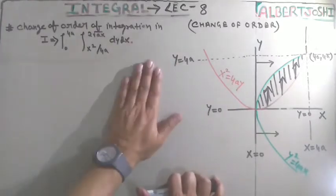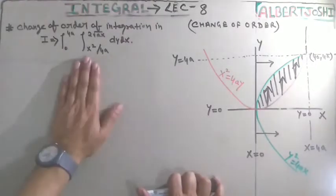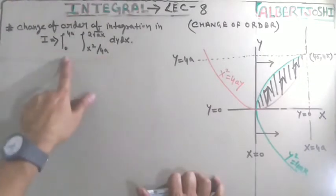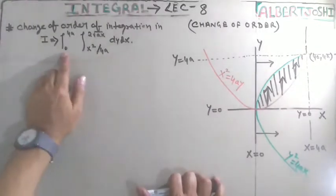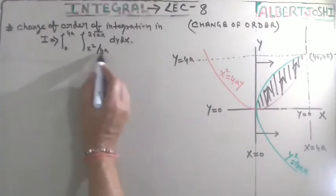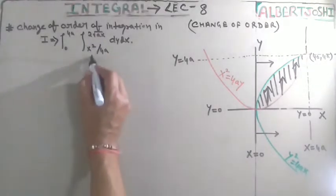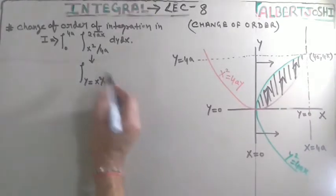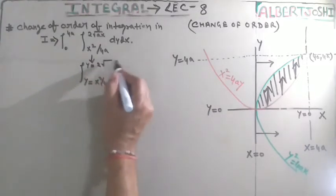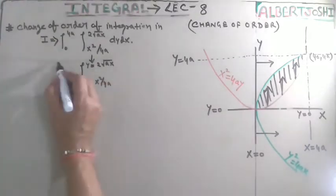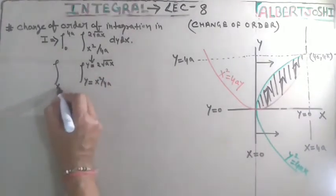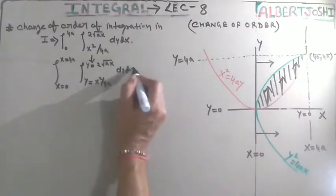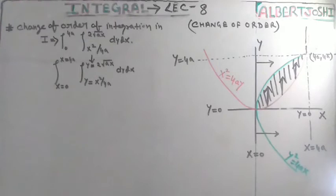In this question I am again solving the double integration, but by the help of change of order. So what is the meaning of this — I am again explaining. He has given y equal to x squared upon 4a, and y equal to 2 times square root of ax. So if this is y equal to something, then definitely x equal to 4ay, and this is dy dx.